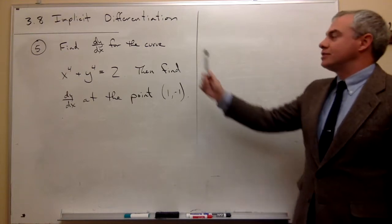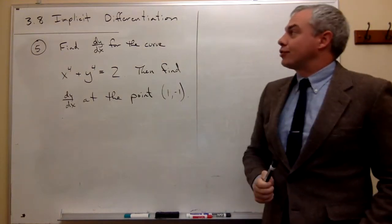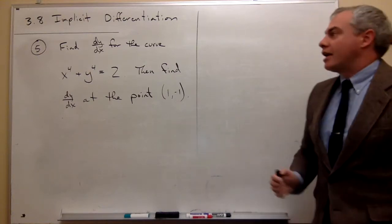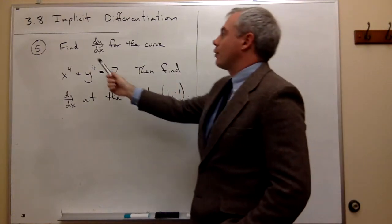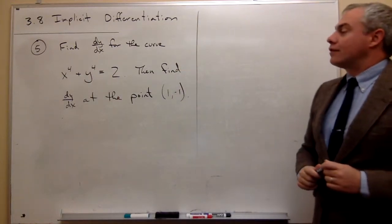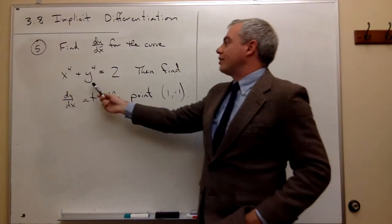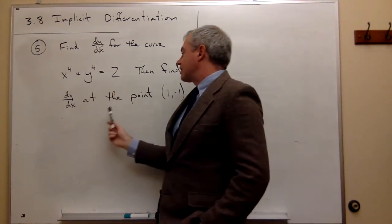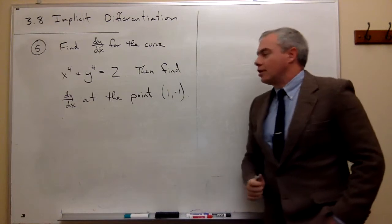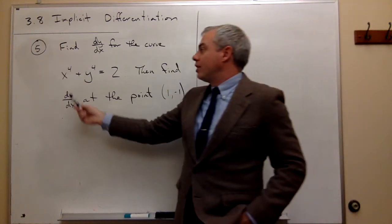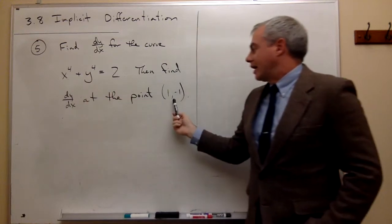Welcome back. Today we're going to look at section 3.8 on implicit differentiation and I want to start with number five where we want to find dy/dx for the curve x^4 + y^4 = 2. Then I want to find dy/dx at the specific point (1, -1). In other words, I want to find the slope of this curve at this point.